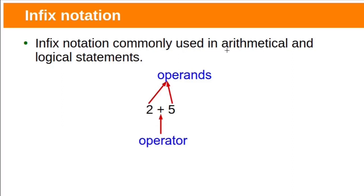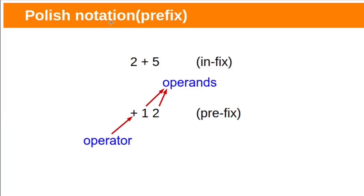Infix notation is commonly used in arithmetic and logical statements. In infix notation, operators are placed between operands. Polish notation, also known as prefix notation, is where operators precede their operands. For example, adding two and five is written with the operator first in prefix notation — the operator precedes the operands.